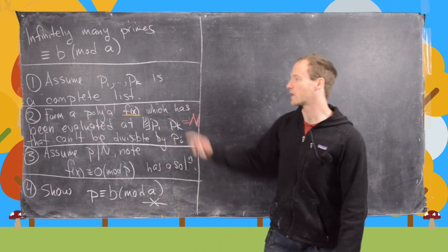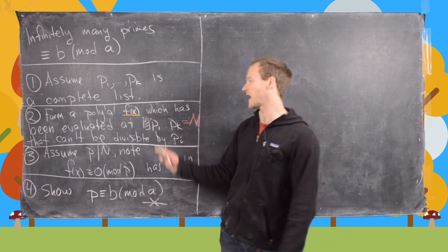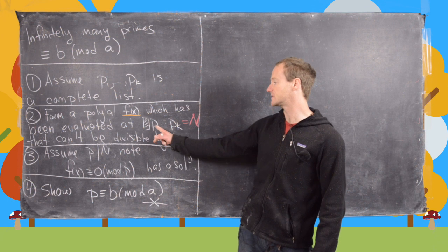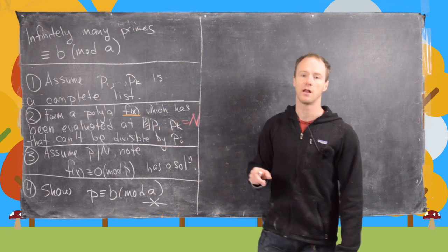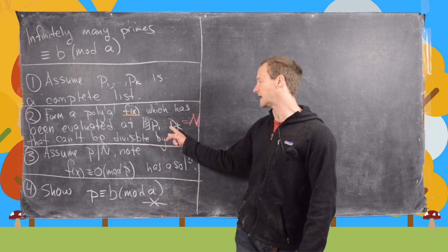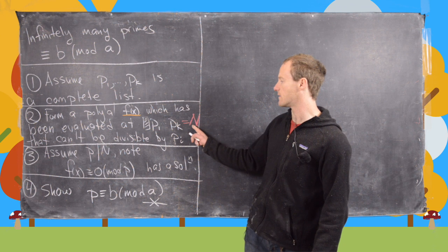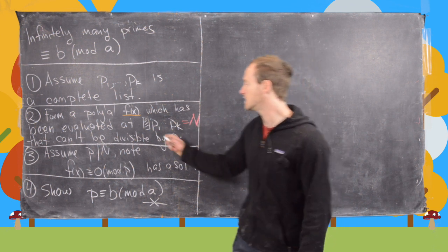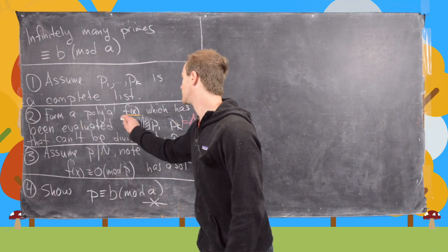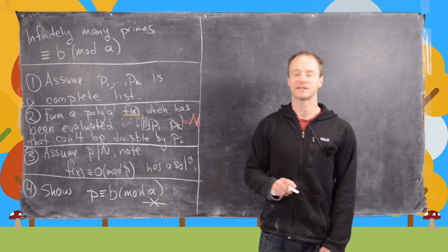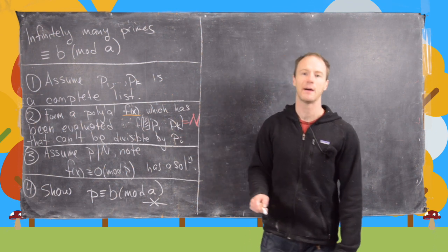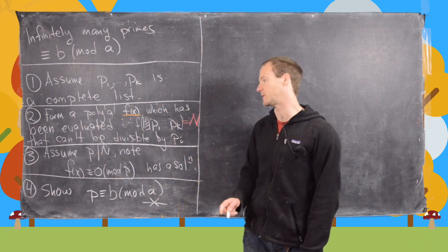Now the next thing is you want to form a polynomial F of X which has been evaluated at some number times the product of all of the primes in this complete list, and generally evaluating it at that number gives us a number capital N. So this should be really F of that number. That gives us capital N and then the important thing is that this capital N cannot be divisible by PI, any of the PI.